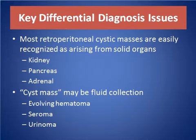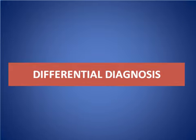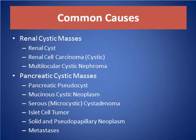The key for differential diagnosis in cystic retroperitoneal mass lesion: most retroperitoneal cystic masses are easily recognized as they are arising from solid organs like kidney, pancreas, and adrenal. Cystic masses may also be fluid collections like an evolving hematoma, seroma, and urinoma.